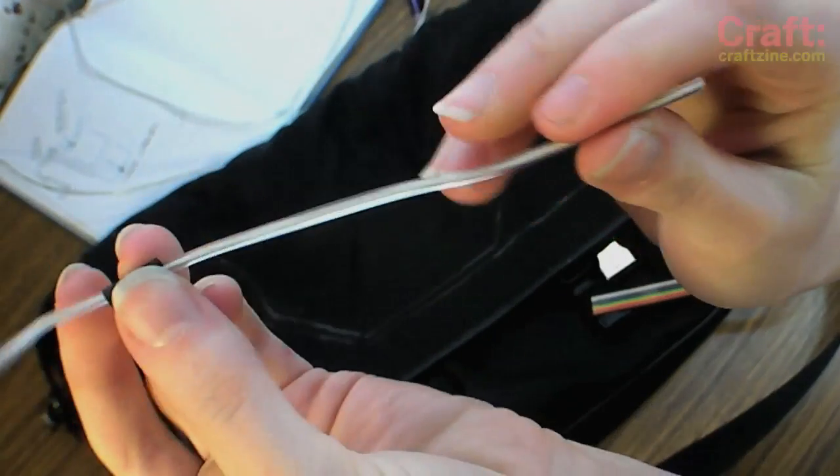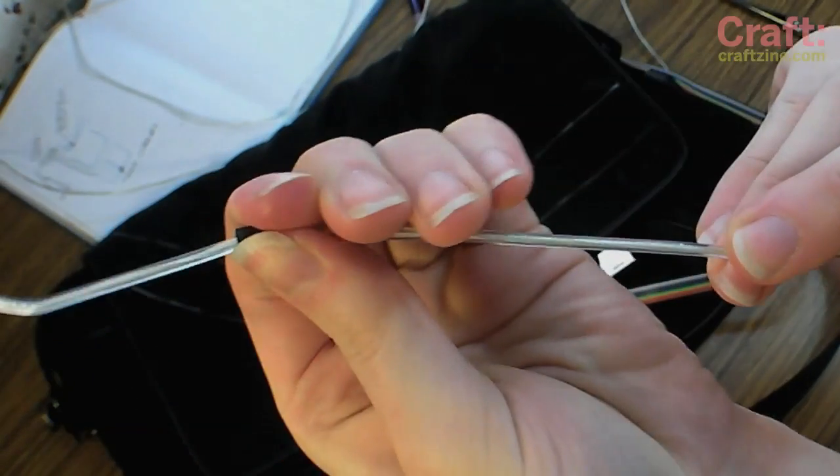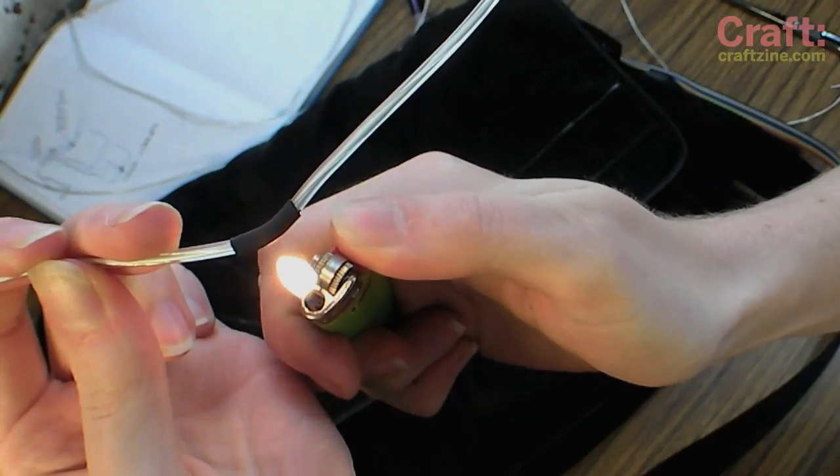You can use a small piece of heat shrink tubing to black out sections of the EL wire. This is a really easy way to make interrupted lines in your design.